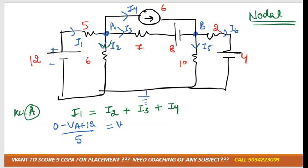I3 is moving from VA to VB, so it's VA minus VB minus 8, because we have to take the second sign, divided by 7. And I4 is the current source directly, so we can directly write it as 6 amperes.